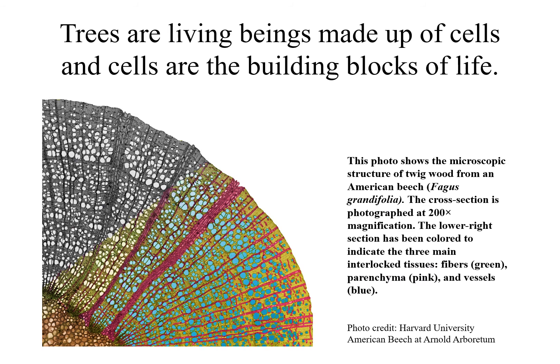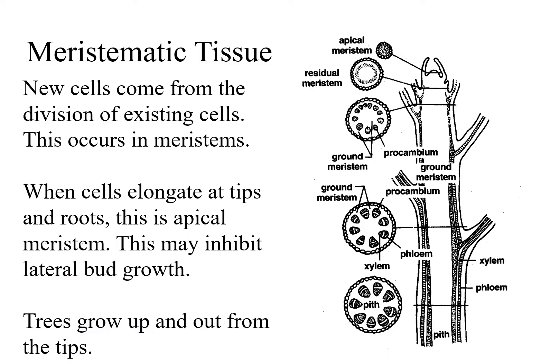Trees are living beings made up of cells, and cells are the building blocks of life. In plants, new cells come from the division of existing cells. Tree cell division occurs in structures called meristems or in meristematic tissue.